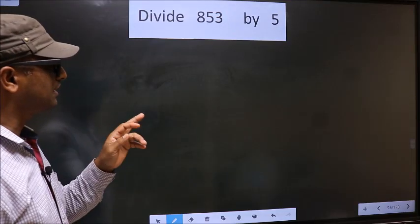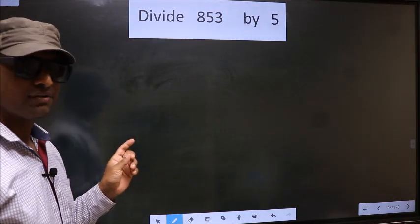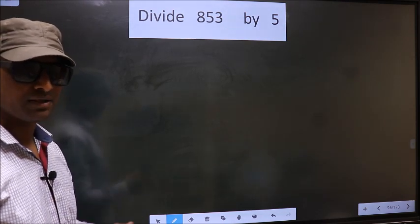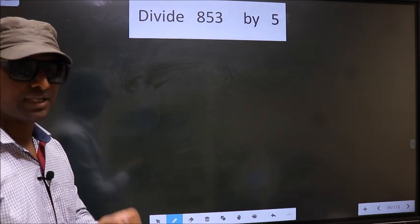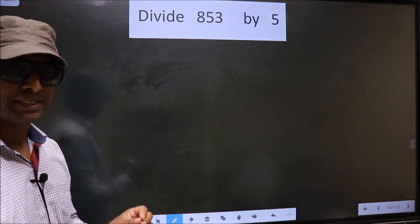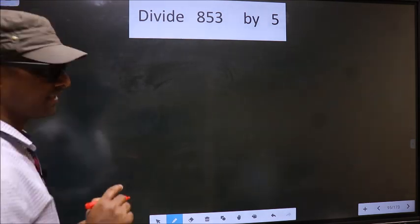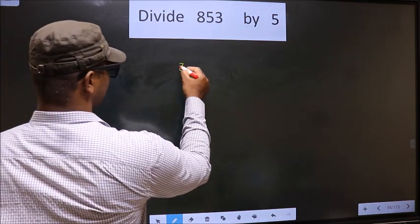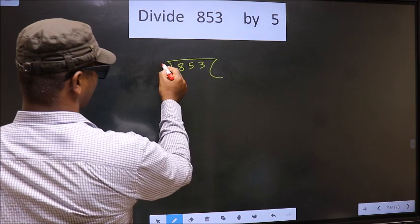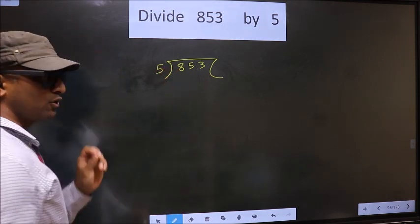Divide 853 by 5. While doing this division, many do this mistake. What is the mistake that they do? I will let you know. But before that, we should frame it in this way: 853 divided by 5 here, okay.